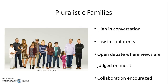Another type of family is the pluralistic family, which we see on the show Modern Family. There's a lot of rich conversation because you're high in conversation orientation, but there's low conformity because you're such a diverse group of people. In this case there's going to be open debate where views are judged on merit. You'll notice that at times they have really strong disagreements and voice those differences, but because they are such a high conversation family they're okay with dealing with those debates — and in fact collaboration is encouraged.